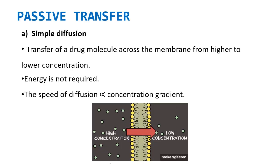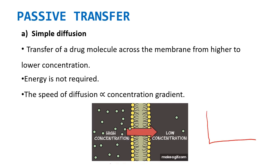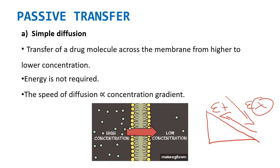The next topic is Passive Transfer. In that, we will see simple diffusion — the transfer of a drug molecule across the membrane from higher to lower concentration. So the process is concentration-gradient dependent, and energy is not required. When climbing a slope upward you need energy, but going downward you don't. Same concept applies in simple diffusion.